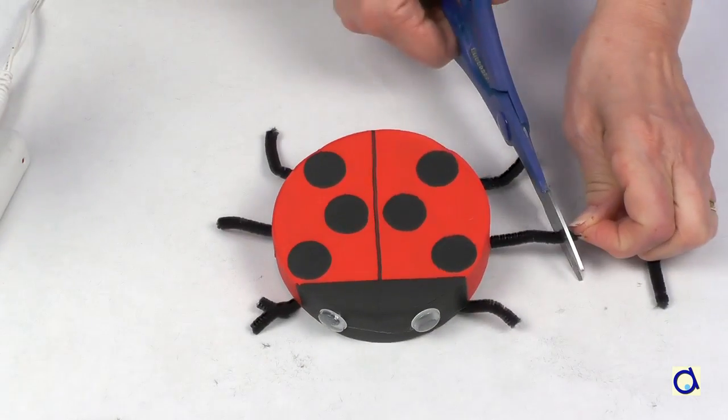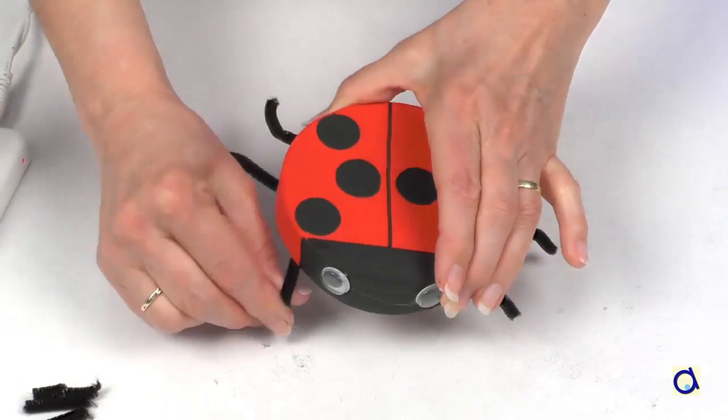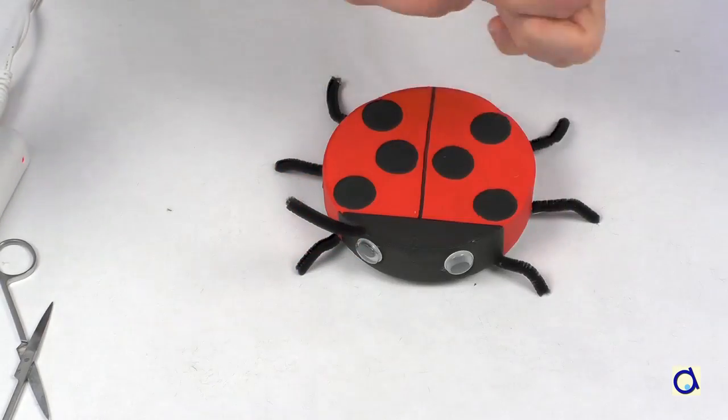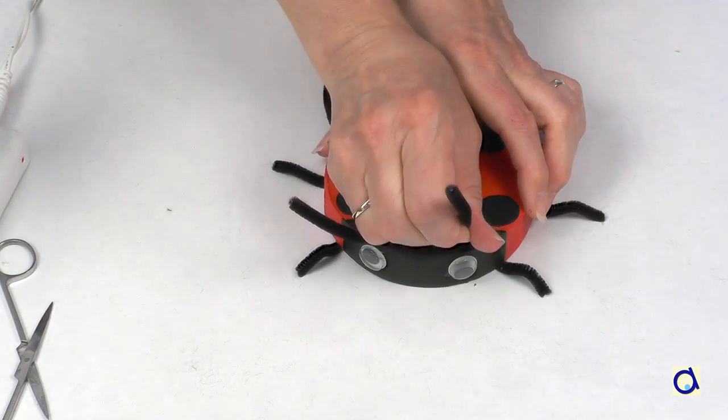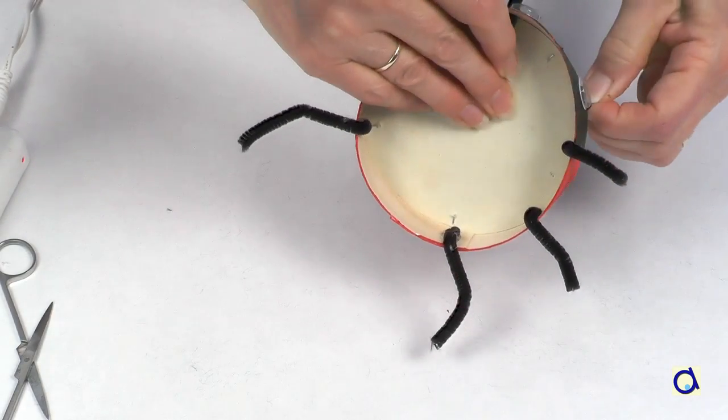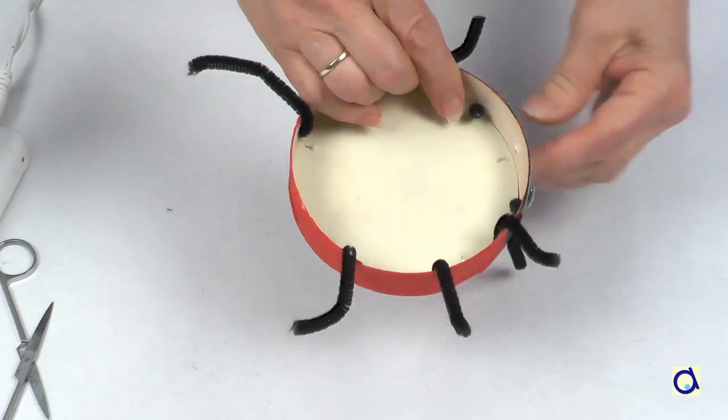If necessary, shorten the legs to give them a more natural look. The last two pieces of pipe cleaner will form the antennas of the ladybug. Insert the antennas into the gap between the circle and the vertical edge of the box at the head.